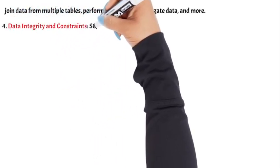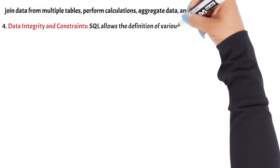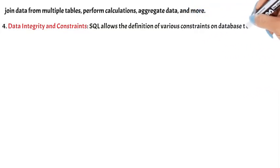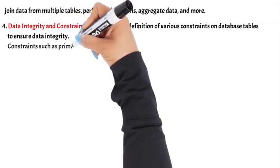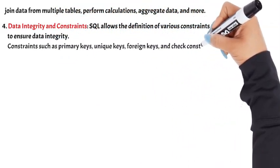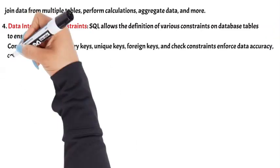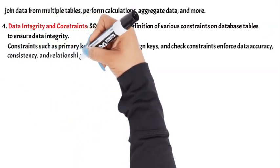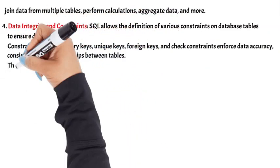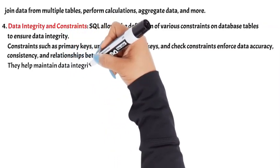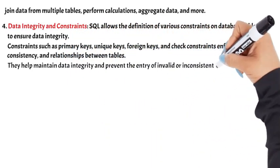Data integrity and constraints. SQL allows the definition of various constraints on database tables to ensure data integrity. Constraints such as primary keys, unique keys, foreign keys, and check constraints enforce data accuracy, consistency, and relationships between tables. They help maintain data integrity and prevent the entry of invalid or inconsistent data.